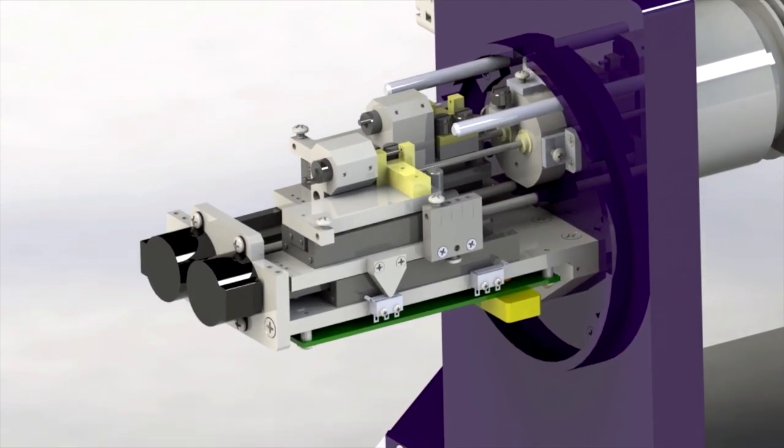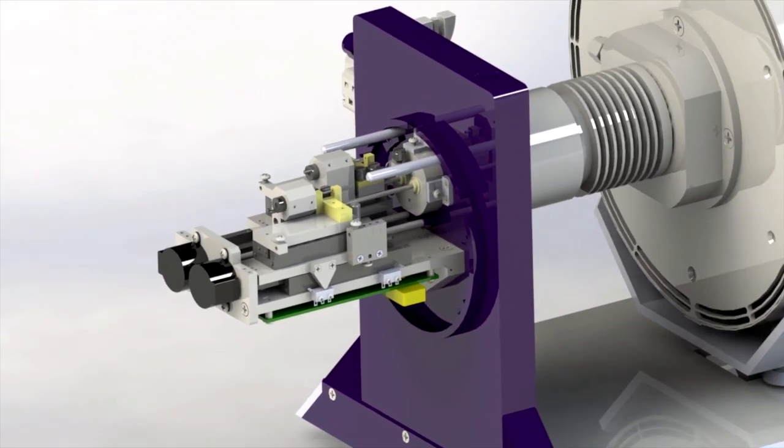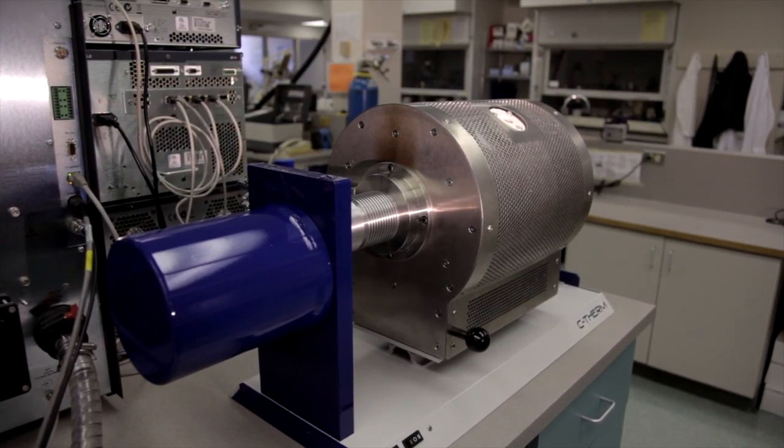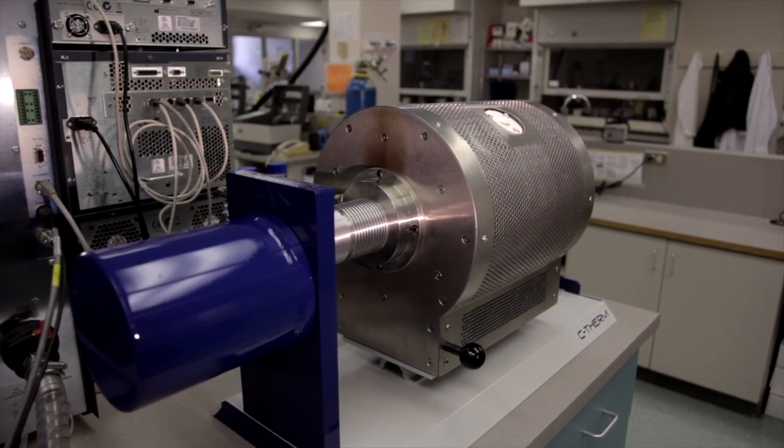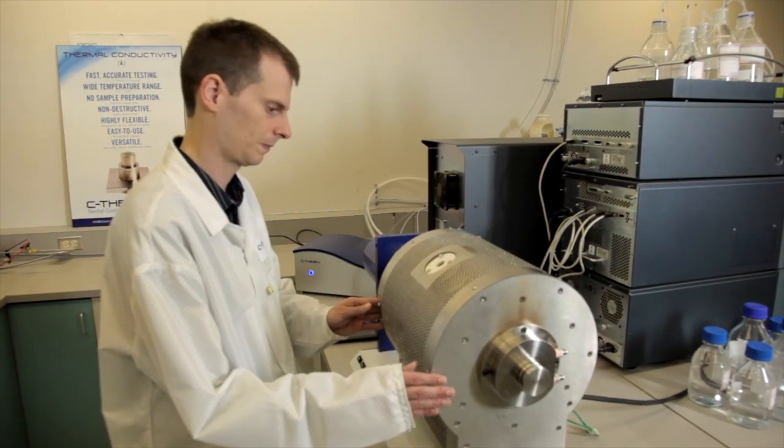The system can be configured as a single or dual rod arrangement with one or two LVDTs with an adjustable contact force of up to one Newton. The horizontal construction offers the best temperature uniformity and allows measurements to be carried out in pure gas environments and under vacuum.